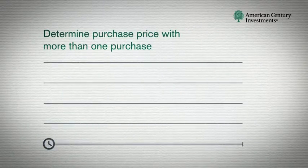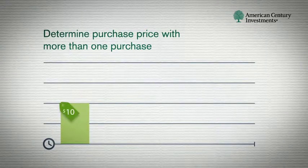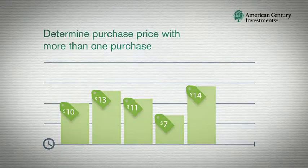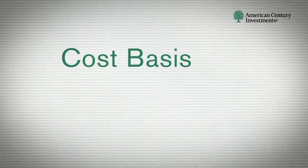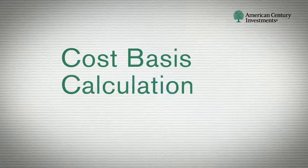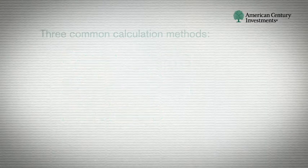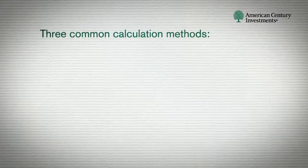Determining cost basis is fairly simple when you make only one purchase. But what happens when you have multiple purchases or reinvested distributions? This is where things become more complex. If you make multiple purchases, a formula must be used to determine your gain or loss. These are called cost basis calculation methods, and there are several methods to choose from.